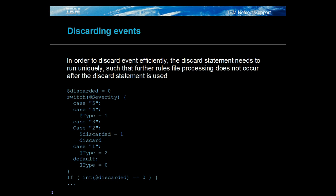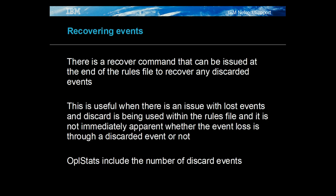In order to discard events efficiently, the discard logic must prevent further rules file processing after the event is discarded, given any additional processing post-discard is also discarded. Recovering events is best performed at the end of the rules file if it is thought that missing events are due to some unexpected discard. Once it is confirmed the missing event was discarded, further rules file investigation should be performed where the event was incorrectly discarded, for example logging out each discarded event's details.